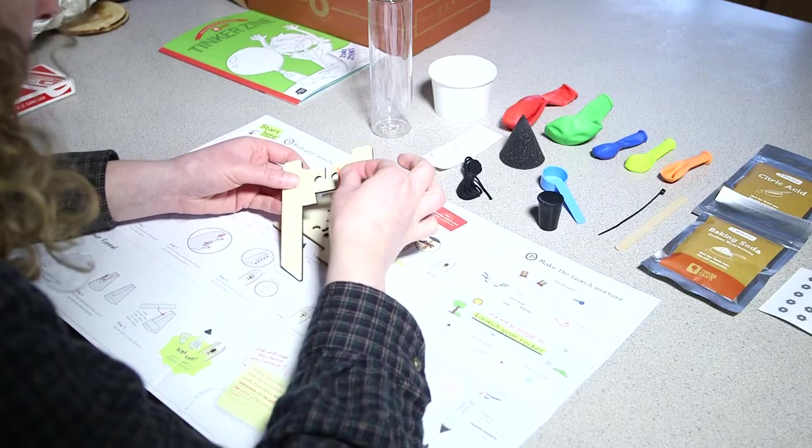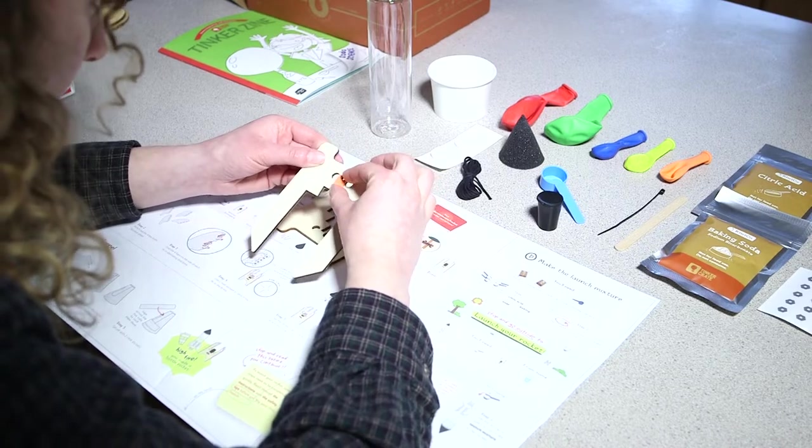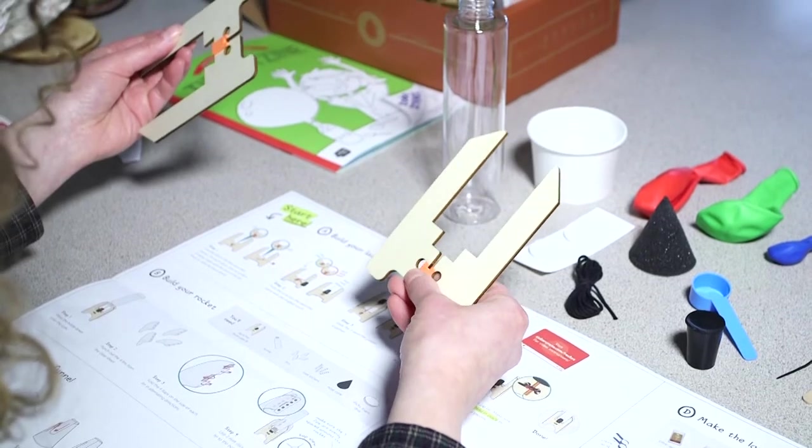Step one: find the slits in the two launcher pieces. On each piece, line up a piece of sticky foam with the end of the slit. Press to stick the foam down.